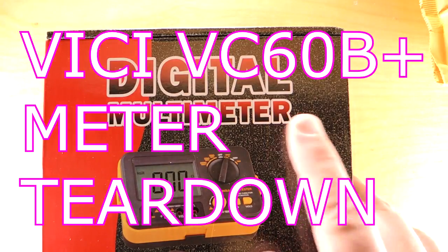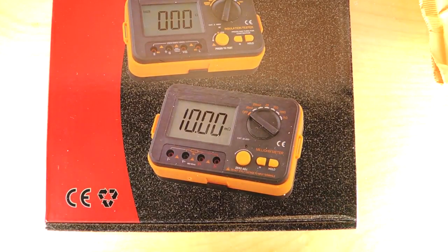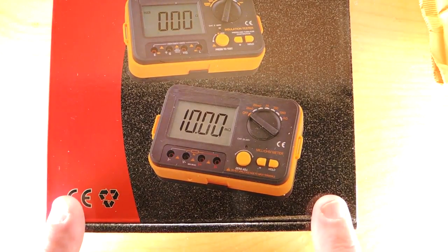Teardown time. The box says digital multimeter, but it's actually a very special kind of meter. It's a mega-ohm meter. This is the Vici VC60B Plus. Let's take it apart.